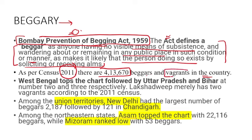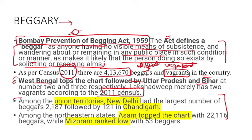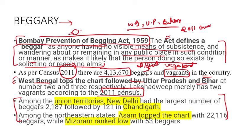Vagrants are also beggars but are slightly different — more strongly built, vagabond type. Beggars were usually associated with old and disabled people. As per Census 2011, West Bengal and UP top the list, followed by Bihar. Remember: WUB — West Bengal, UP, Bihar.